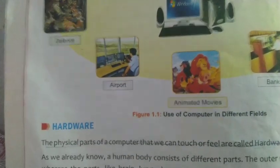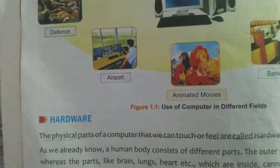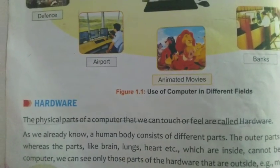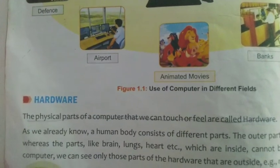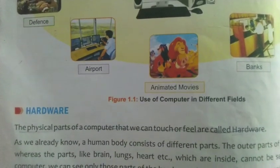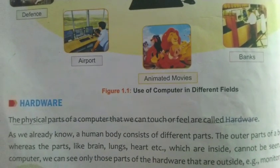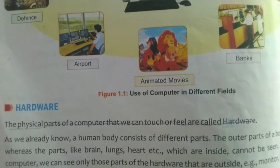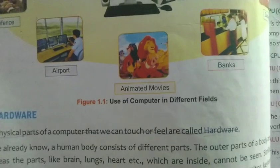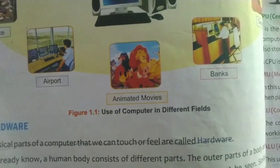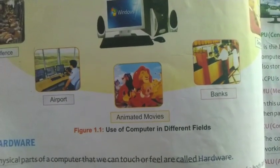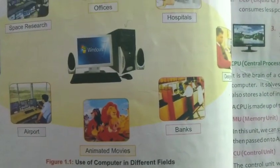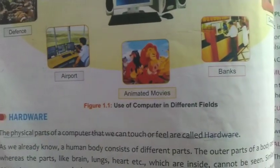Now we will see the meaning of the word hardware. Hardware refers to the physical parts of the computer which you can see or feel. Examples include mouse, keyboard, UPS, motherboard, monitor, and so on. All of these come under the term hardware.